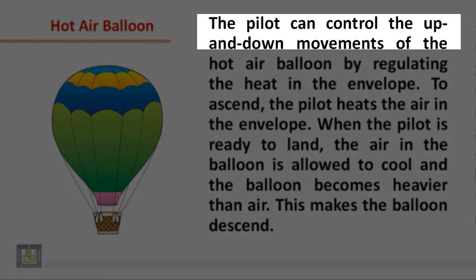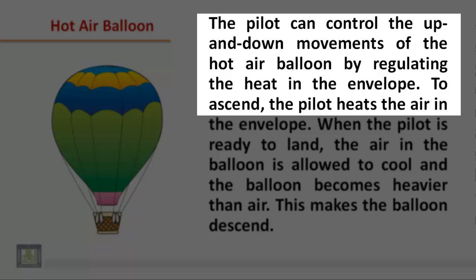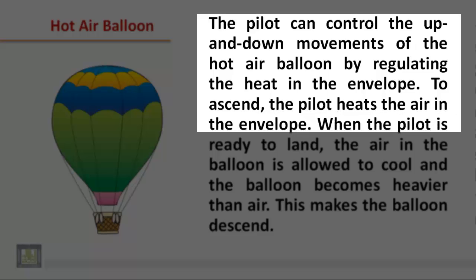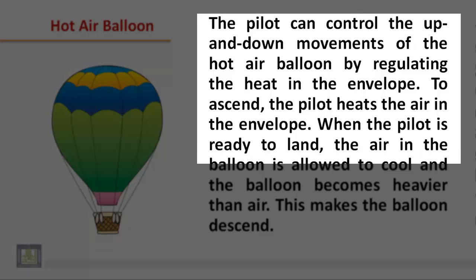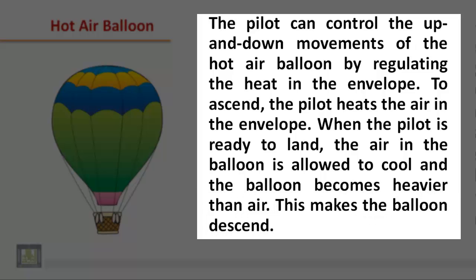The pilot can control the up and down movements of the hot air balloon by regulating the heat in the envelope. To ascend, the pilot heats the air in the envelope. When the pilot is ready to land, the air in the balloon is allowed to cool and the balloon becomes heavier than air. This makes the balloon descend.